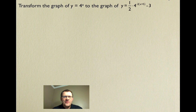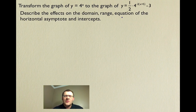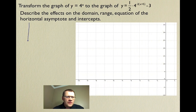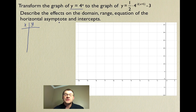Here's our first example: transform the graph of y = 4^x to the graph of y = (1/2) · 4^(-2x + 5) - 3, and describe the effects on the domain, range, equation of the horizontal asymptote, and intercepts. We'll take points from the original graph and apply all the transformations to those points. When x = 0, y = 1; when x = 1, y = 4; when x = 2, y = 16; and when x = 3, y = 64.